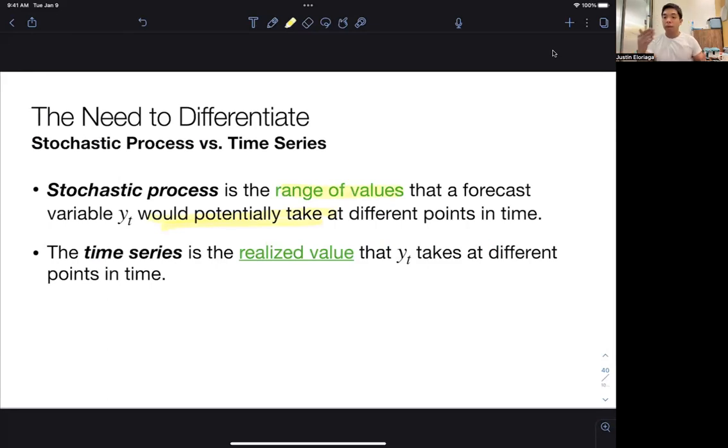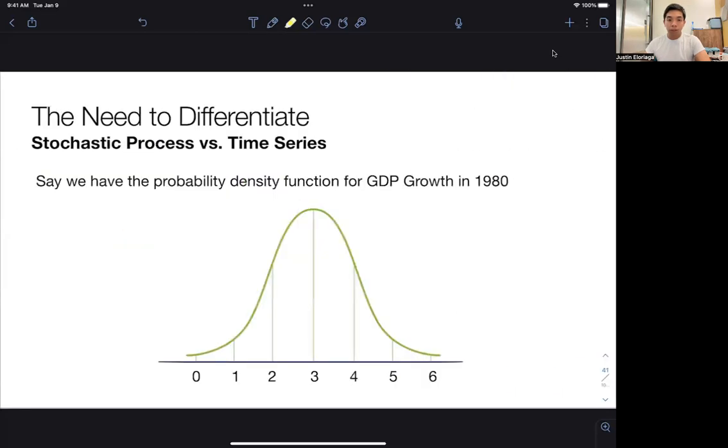Now, how does it differ from what a time series is? What do we really refer to as the time series? Well, a time series is effectively not a probability distribution. It's just a point because it is the realized value that Yt takes at different points in time. So that time series exists within the stochastic process. If the stochastic process is a probability distribution function, the time series itself is a point in that probability distribution function. And it's the point that was actually realized. It's the realized value that Yt takes.